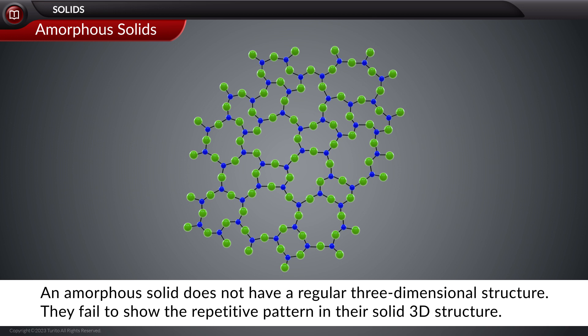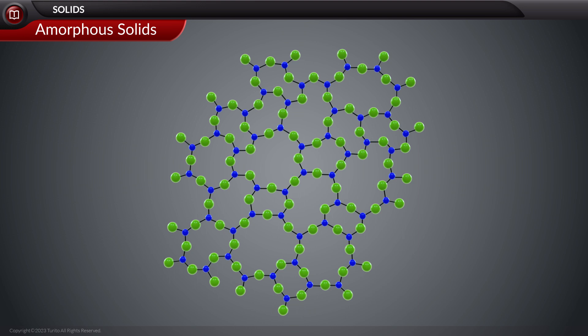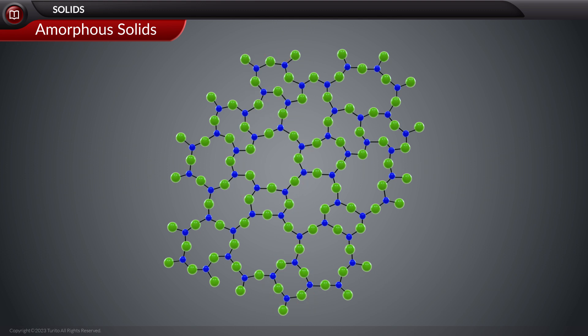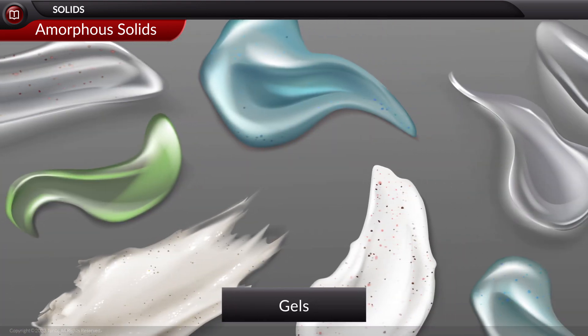An amorphous solid does not have a regular three-dimensional structure. They fail to show a repetitive pattern in their solid 3D structure. As shown on the screen, there are many types of patterns that form this solid structure. Examples of such solids which show multiple patterns of arrangement in their solid structure are glasses, ceramics, gels, and polymers.